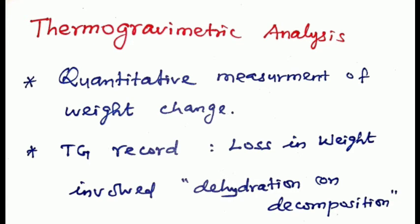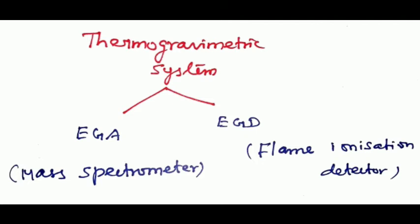Principles for thermogravimetric analysis: in a thermogravimetric system, two analyzers are used. One is evolved gas analyzer (EGA), another one is evolved gas detection (EGD). In EGA, gaseous components are determined, whereas in EGD, only a single component of the evolved gas is determined. EGA is a mass spectrometer, whereas EGD is a flame ionization detector.